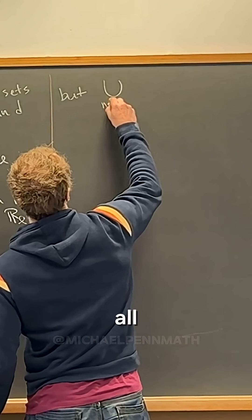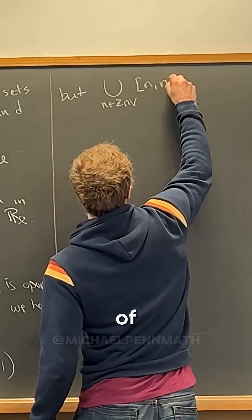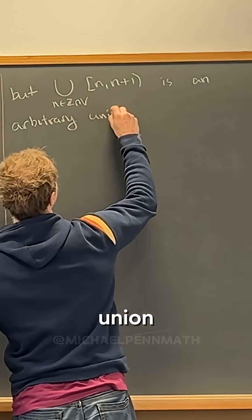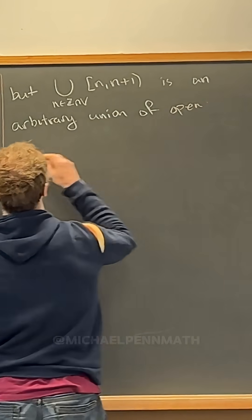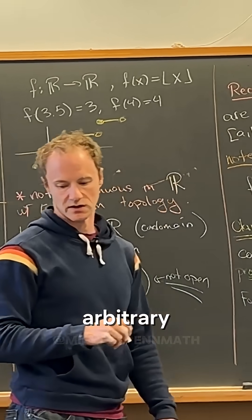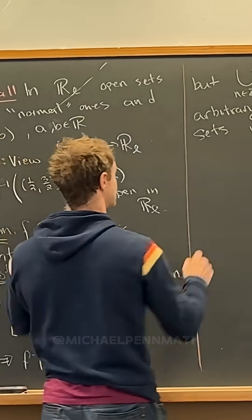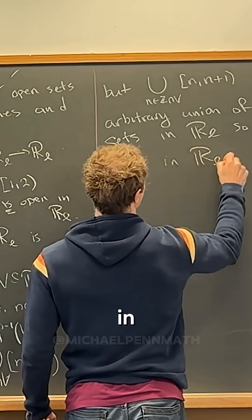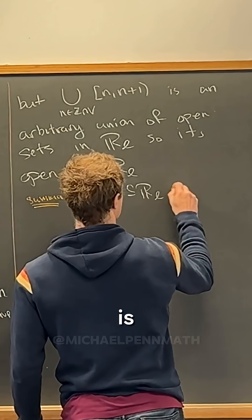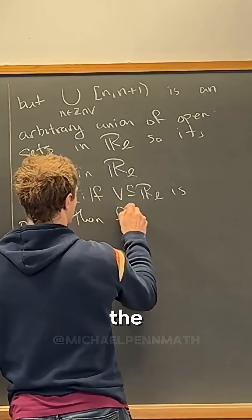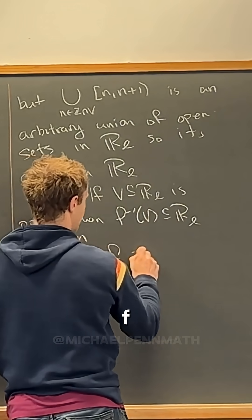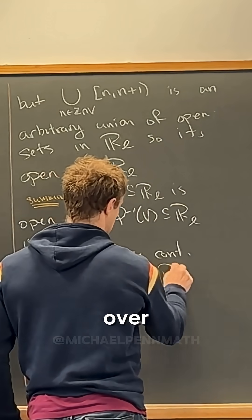The union over all integers in V of N to N plus 1 is an arbitrary union of open sets in RL. An arbitrary union of open sets is necessarily open, so it's open in RL. Our summary: if V in RL is open, then the pre-image of V in RL is open. But that's equivalent to saying F is continuous over RL.